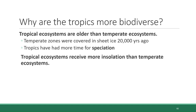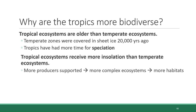Another hypothesis has to do with the fact that tropical ecosystems receive more insolation than temperate ecosystems. We talked previously in our climate chapter about how equatorial regions get more direct sunlight. It's not entirely clear how this would translate into a larger number of species, but it may be the case that with more sunlight, more producers — meaning plants — can be supported, creating more complexity in ecosystems with more habitat niches that organisms can evolve and adapt to.